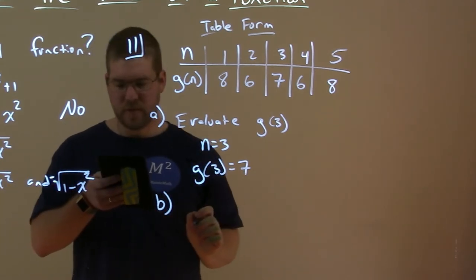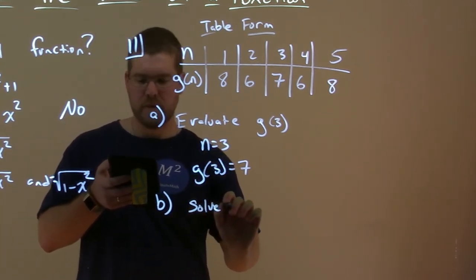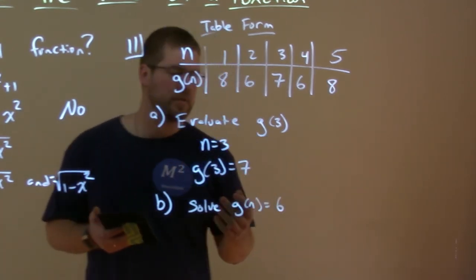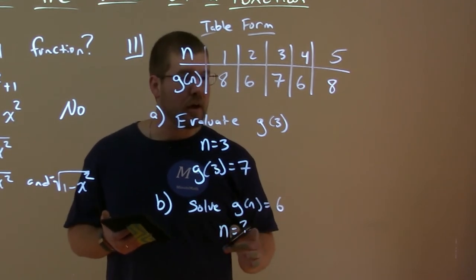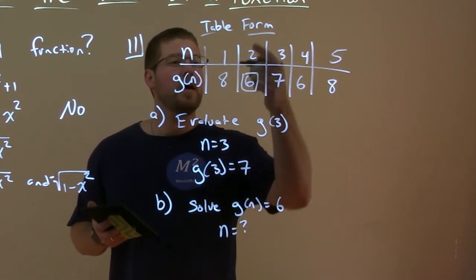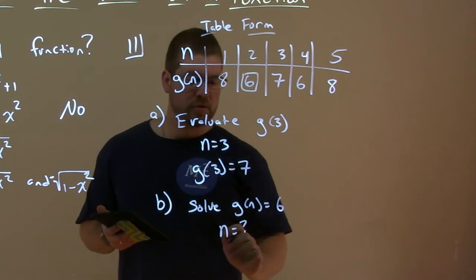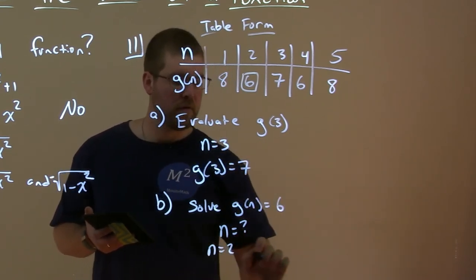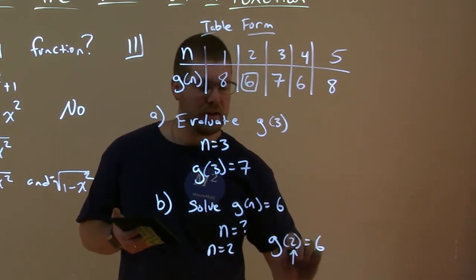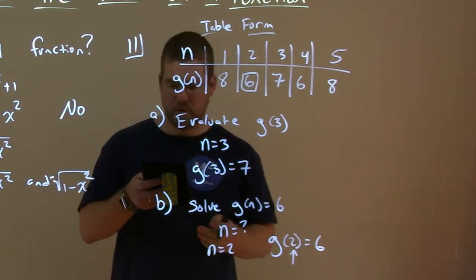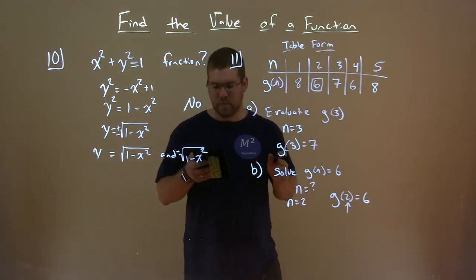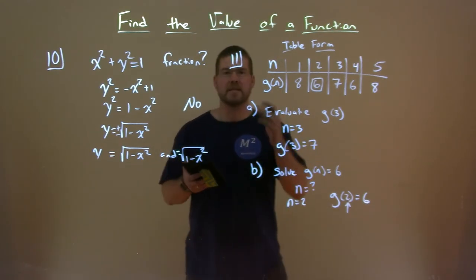Part B asks us to solve g(n) equals 6. Now we're asked a different question: what n value gives us an output of 6? If we look at that, an output of 6 is right here - the input was 2. If n is 2, we get an output of 6. So g(2) equals 6, and 2 was the input we were looking for.